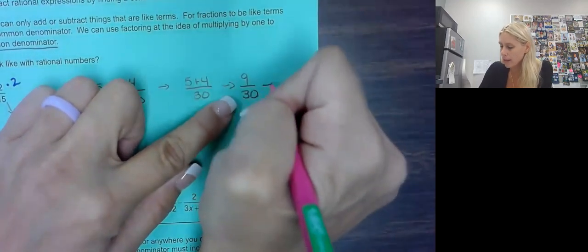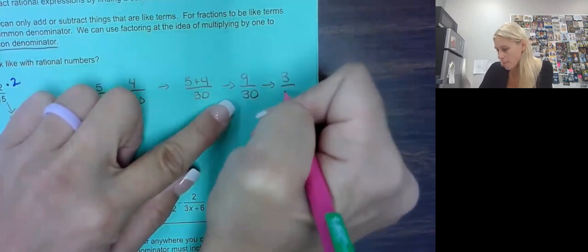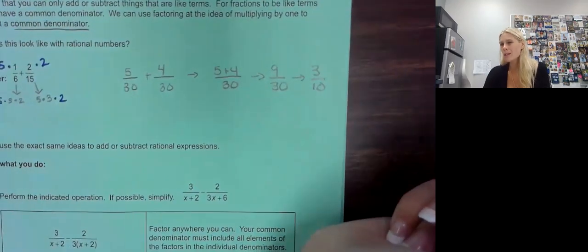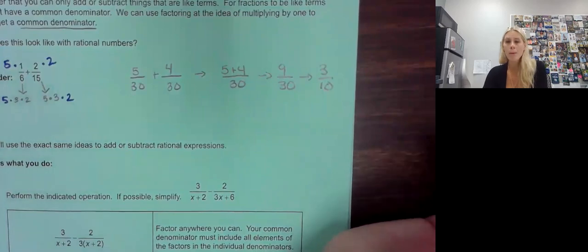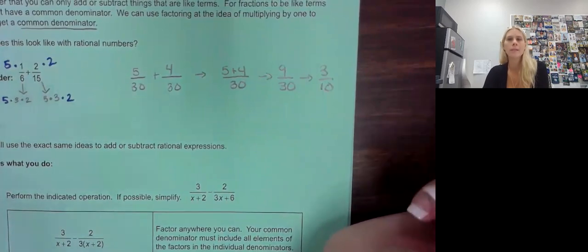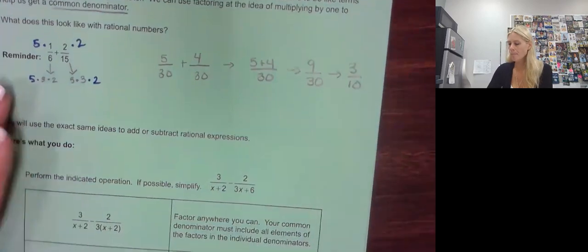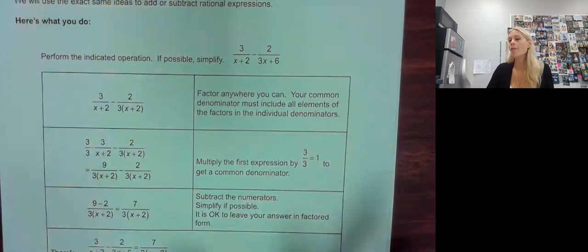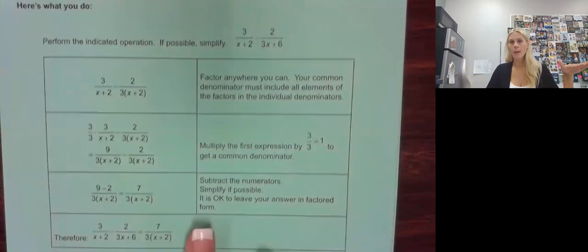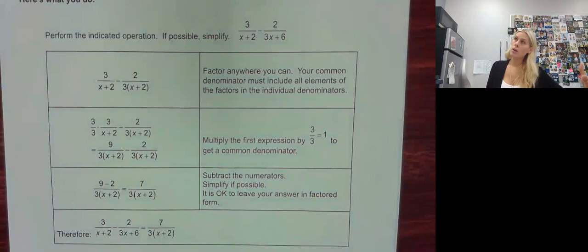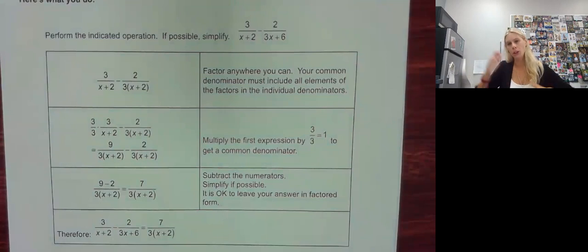We can also reduce this: three goes into nine and three goes into 30, giving us three over ten. Most of the work we're going to do today and next class we won't be able to reduce — we'll be combining like terms and leaving it as is.